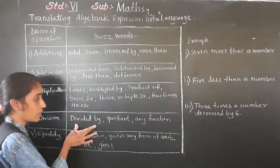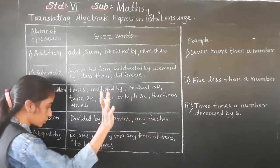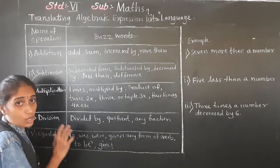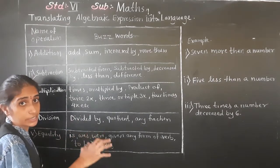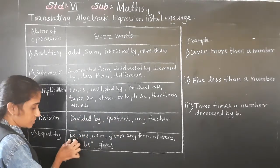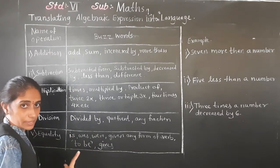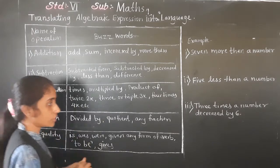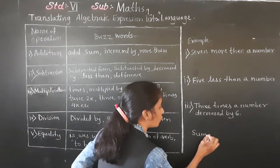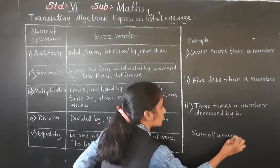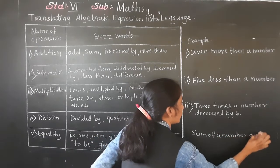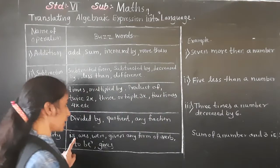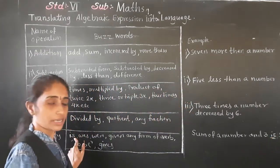For division, the words we use are: divided by, quotient, any fraction. For equality, the word 'is' is used. For example: 'Sum of a number and three is five' — here 'is' shows equality.